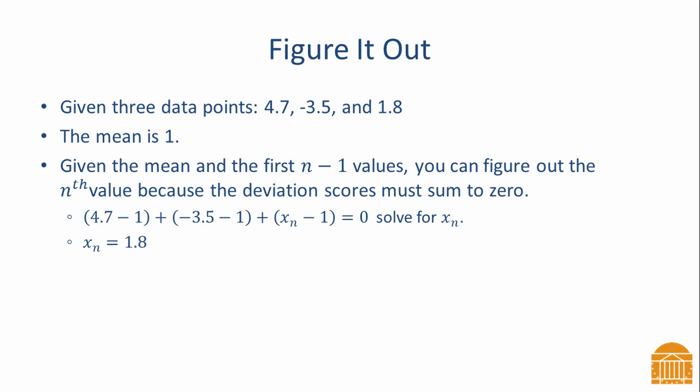And you can see here, if I consider the deviation scores, the first two are going to be 4.7 minus 1, plus negative 3.5 minus 1. If I plug in just a variable, x sub n for my last data point, I set this equal to zero and solve for x sub n, it's very easy to see that that last value is going to be 1.8.